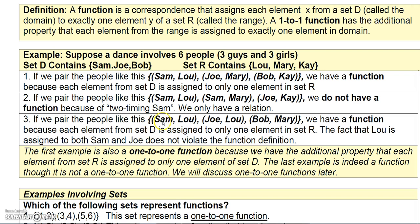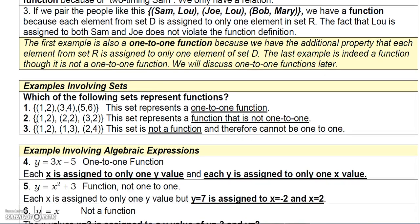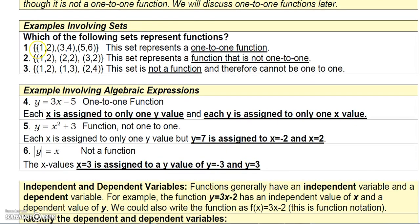Now if we paired them so that Sam was assigned to Lou, Joe was assigned to Lou, and Bob was assigned to Mary, we would have a function since Sam, Joe, and Bob are each only assigned to one element. But it would not be a one-to-one function because Lou — an element from the range — is assigned to two different elements in the domain: Sam and Joe.